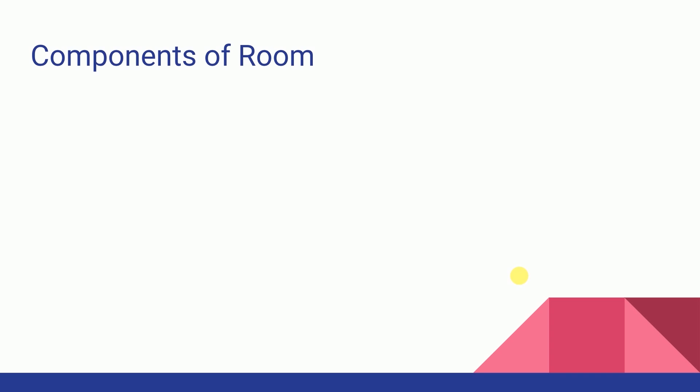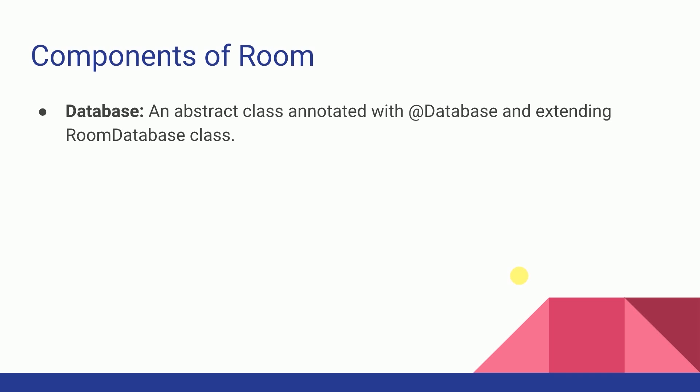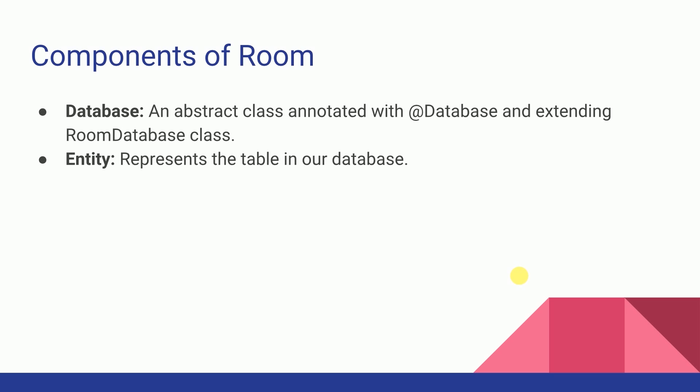Now let's discuss the components of Room. The first component is the Database — it is an abstract class annotated with the @Database annotation and it should extend the RoomDatabase class. The next component is Entity, which represents a table in the database. And finally we have DAO, or Data Access Objects — these are interfaces that contain functions to access or manipulate our database.